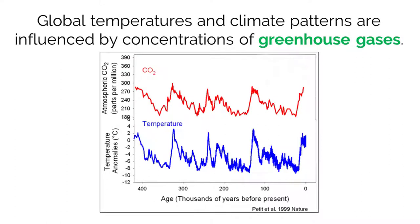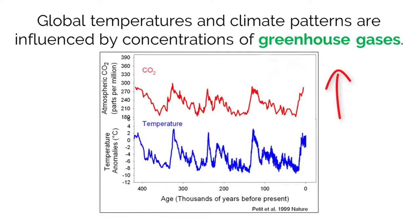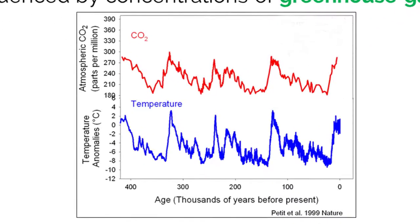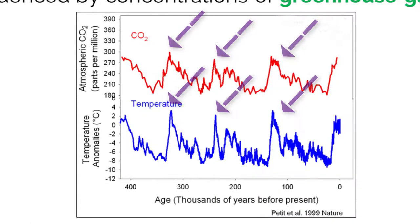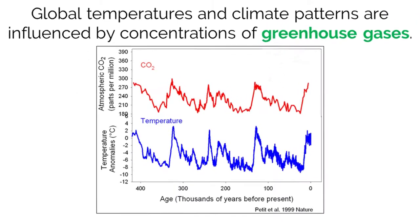Scientists have been collecting temperature data for decades and can actually reference old geological samples of Earth to predict temperature patterns that occurred thousands of years ago. When they match them up with concentrations of greenhouse gases, they find a relationship. Global temperatures and climate patterns are influenced by concentrations of greenhouse gases, meaning higher amounts of greenhouse gases in the atmosphere correlated to higher temperatures. This figure shows how some of those anomalies in temperature actually match up to increased atmospheric carbon dioxide concentrations. As of today, we have a lot of good data that shows greenhouse gases affect global temperatures.